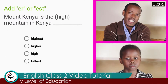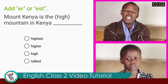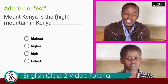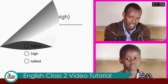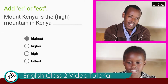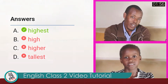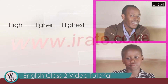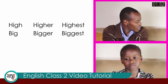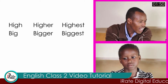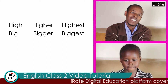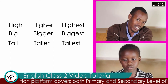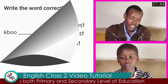Question number six: add ER or EST. Mount Kenya is the high mountain in Kenya. Highest. That is correct. We say high, higher, highest. We also say big, bigger, and biggest. Tall, taller, and tallest. That is very good.